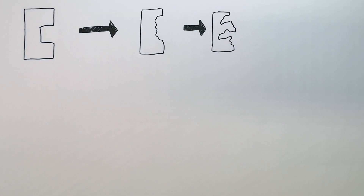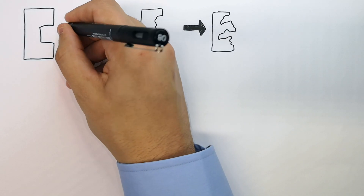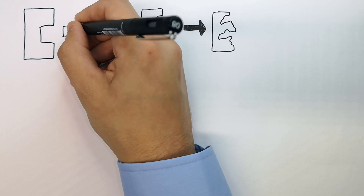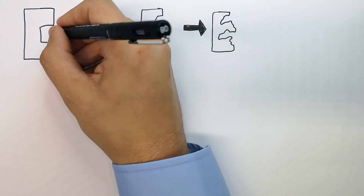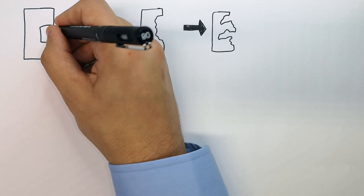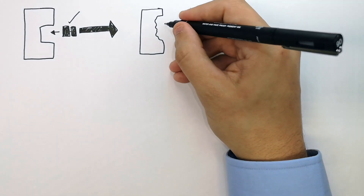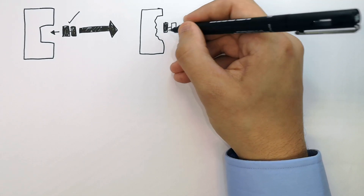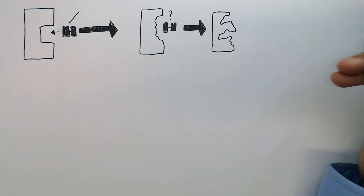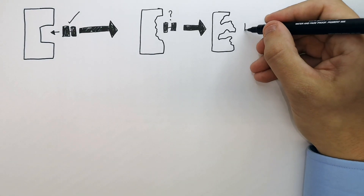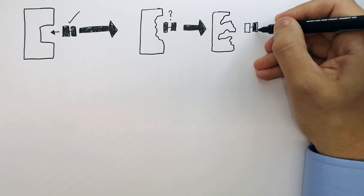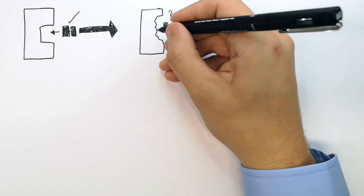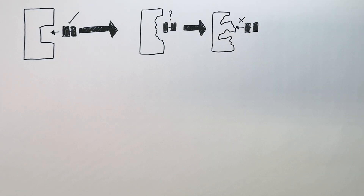A substrate specific to the active site of an undenatured enzyme can still bind. If it's slightly denatured — drawing a substrate binding a slightly denatured active site — some can bind and some can't. This here is a completely denatured enzyme, and the substrate will not bind the enzyme's active site.